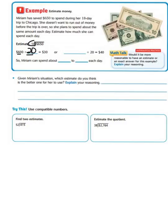or we can go to 800 divided by 20, because we have a basic fact of 8 divided by 2. So, Miriam can spend about $30 to $40 each day.